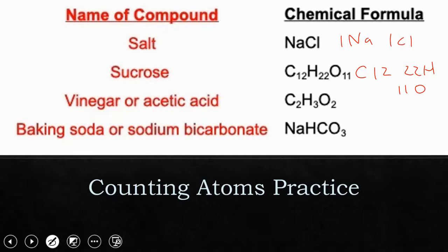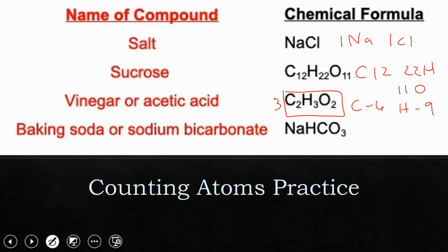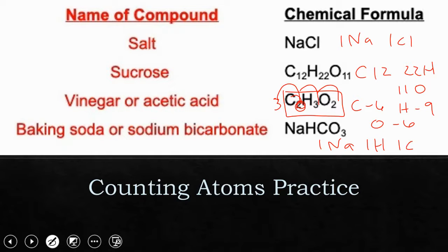For vinegar, let's put a coefficient of 3 to make it more interesting. That 3 belongs to everything behind it, so I multiply each subscript by the coefficient: 3 times 2 gives 6 carbon, 3 times 3 gives 9 hydrogen, and 3 times 2 gives 6 oxygen. The subscript only belongs to the element that it is directly behind. For baking soda NaHCO3, I have 1 sodium, 1 hydrogen, 1 carbon, and 3 oxygen — because the subscript of 3 only belongs to the element directly behind it.